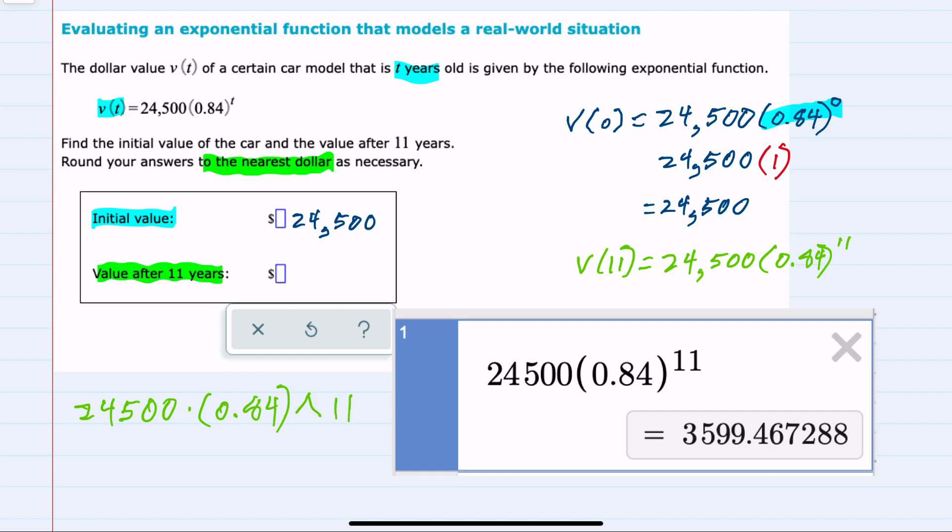And then the 11 exponent gives us 3,599 when rounded to the nearest dollar. Which does make sense that the vehicle would decrease in value over time.